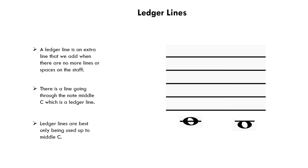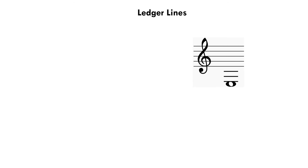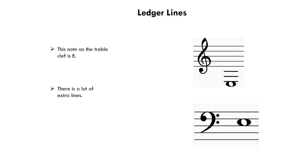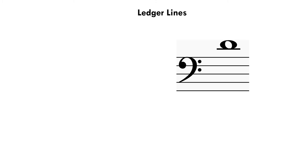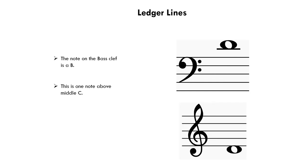Let's use an extreme example of ledger lines. The note on the treble clef is an E — you can see how many extra lines it has, which doesn't look very pleasing. However, this is how the note would look if it was on the bass clef. It is still the exact same note, as both notes are two lines away from middle C. Now let's look at an example where the notes are only one apart from middle C. The note on the treble clef is a B, only one note above middle C.